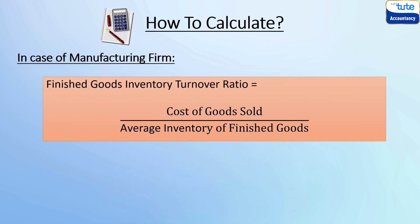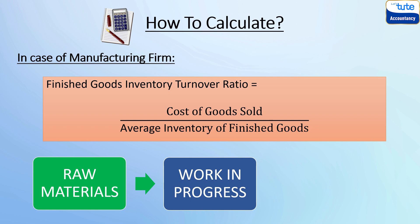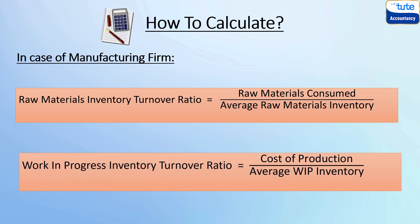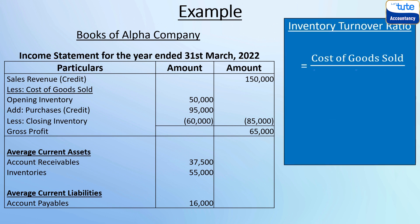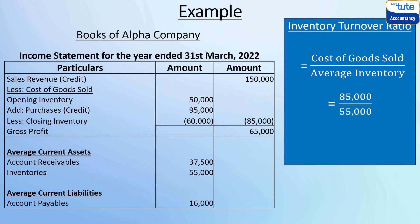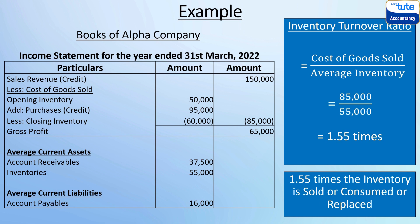For finished goods, the same formula is used where the average inventory of finished goods will be considered. The firm and the analyst might also be interested to know the efficiency with which the firm converts its raw material into work in progress and work in progress into finished goods. So the raw material inventory turnover ratio is calculated by dividing raw material consumed by average raw materials inventory, and the work in progress inventory turnover ratio is equal to cost of production divided by average WIP inventory. Let's calculate inventory turnover ratio using this example: the cost of goods sold is 85,000 divided by the average inventory which is directly given as 55,000. Average inventory can also be derived by taking the average of opening inventory 50,000 and closing inventory of 60,000 which comes to 55,000. The inventory turnover ratio comes to 1.55 times, which means 1.55 times the inventory is sold or consumed or replaced in a year.